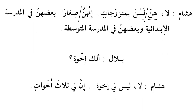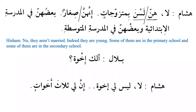Indeed they are young. بَعْضُهُنَّ فِي الْمَدْرَسَةِ الاِبْتِدَائِيَّة — some of them are in primary school — وَبَعْضُهُنَّ فِي الْمَدْرَسَةِ الثَّانَوِيَّة — and some in secondary school. هُنَّ is subject, لَسْنَ is predicate, and the hidden pronoun in لَسْنَ (which is هُنَّ) is إِسْمُ لَيْسَ, while بِمُتَزَوِّجَاتٍ is خَبَرُ لَيْسَ. Bilal asks: أَلَكَ إِخْوَةٌ — do you have brothers? Hisham says: لَا، لَيْسَ لِي — no, I don't have brothers — using the appropriate conjugation form لَيْسَ لِي.